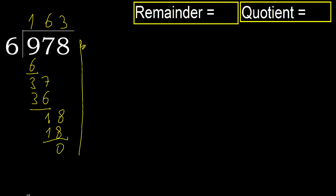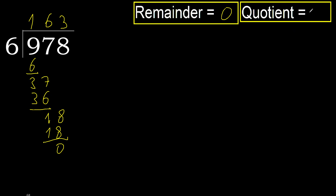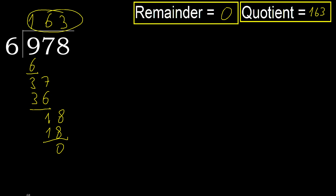There is no next number, therefore finish it. The remainder is 0. Therefore, 978 divided by 6 equals 163.